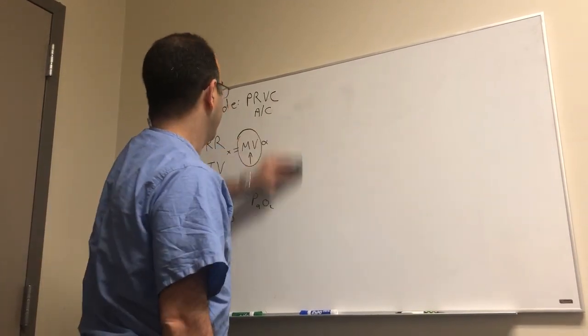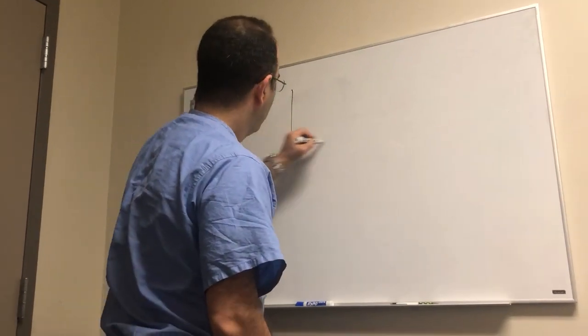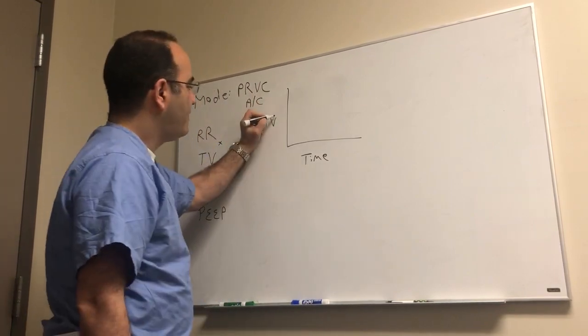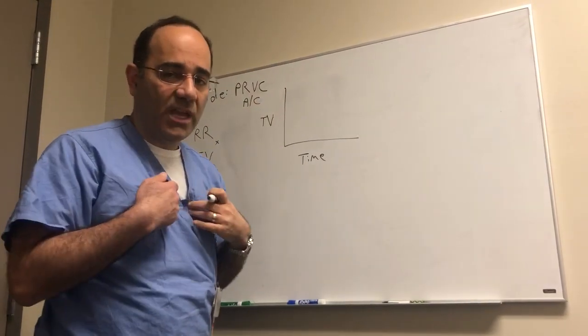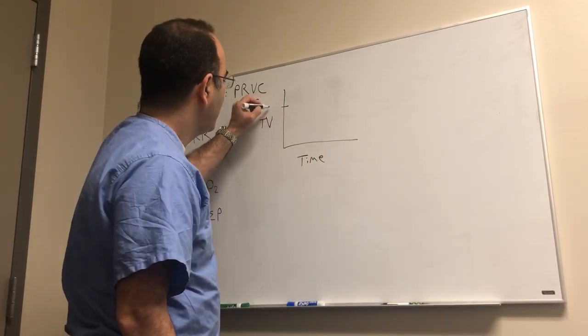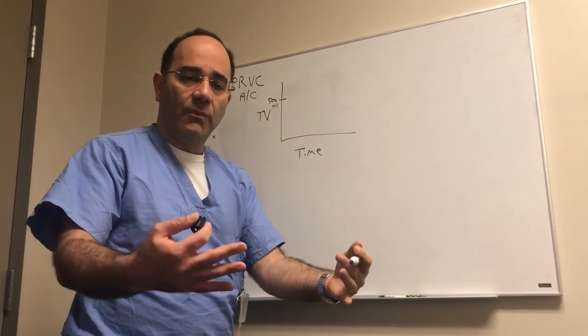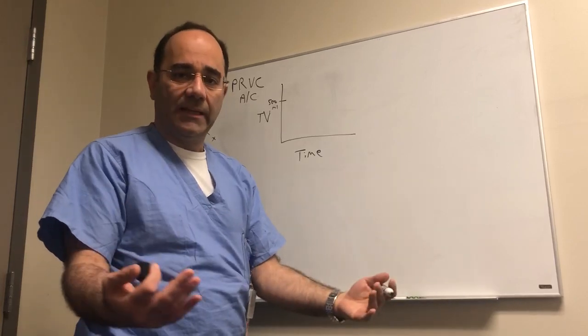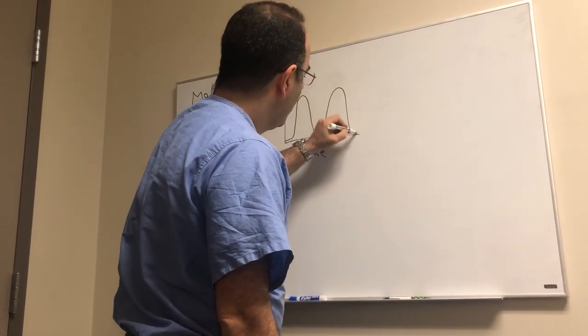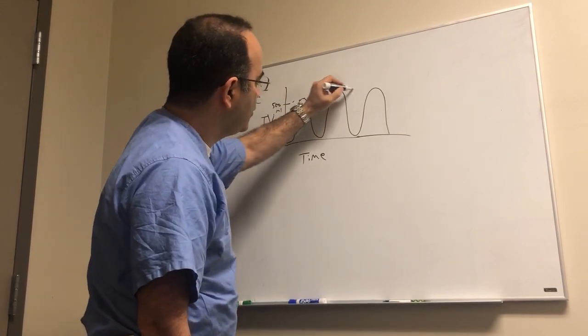Let's start by talking about PRVC for a second. The way PRVC works is, here's time, here's the tidal volume. We are on a volume control mode of ventilation, which means we control how much volume, how much air the patient gets. Let's say we decided to dial in a tidal volume of 500 milliliters. We've dialed in a respiratory rate of 10, which means one breath every six seconds. Six times ten is a minute. So here's the patient breathing. Each cycle will be six seconds long and he's breathing 500 cc each time because that's what we said.